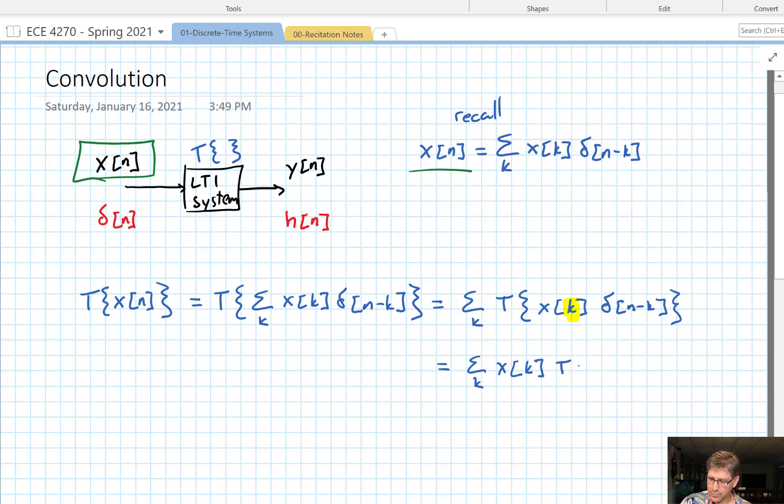So, we've designed x of k. And now, our system is operating on the delta. So, those two steps are due to linearity. Now, we've already defined what happens when the system operates on a delta function. It's going to give us an h, but in this case, we've delayed the input, so the output is going to be delayed. And so that's where time invariance comes to our rescue in giving us this output.